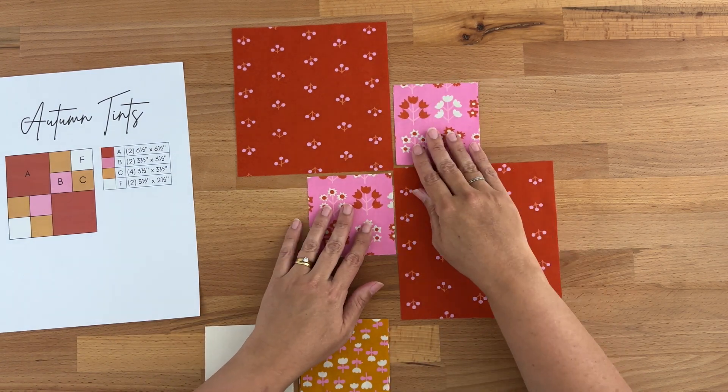What we're going to do is set those stitches, and like the name suggests it sets the stitches into the fabric and makes them stronger plus it helps our block lay flatter. Then I'm going to open it up and we want to press the seams towards our C fabric on all four pieces. I'm just opening it up finger pressing. We don't want any creases in here where our seam is.